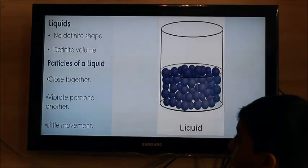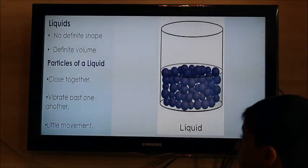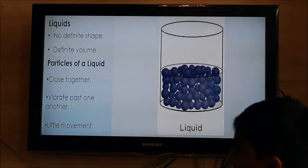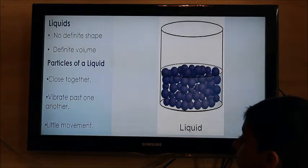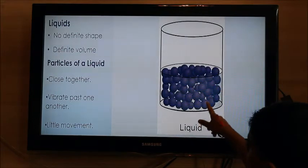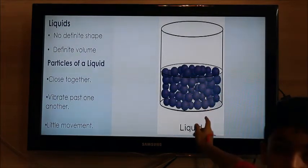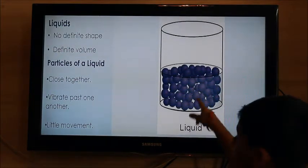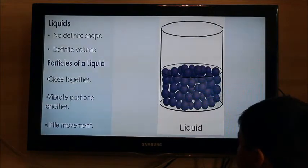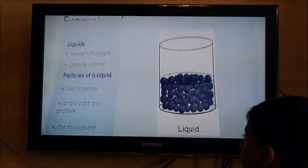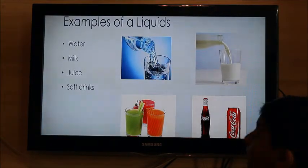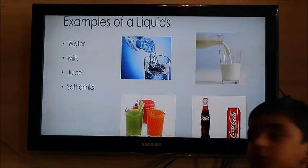Liquids: no definite shape, definite volume. Particles of a liquid are close together, vibrate past one another, little movement. This is a type of liquid and this is a little movement. Examples of liquids: water, milk, soft drinks and juice.